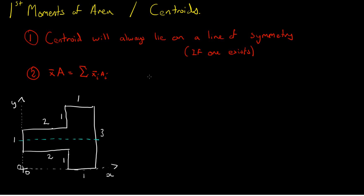We have two main tools for finding the centroid of a shape. One of which is symmetry, which states that the centroid will always lie on a line of symmetry. By extension, if there is more than one line of symmetry, the centroid will lie at the intersection of these lines.